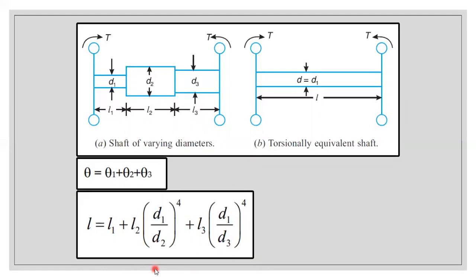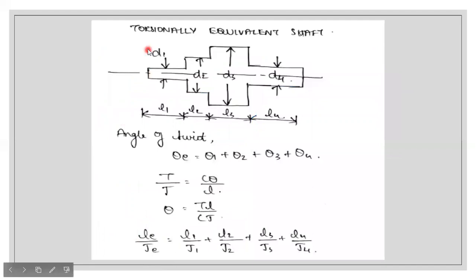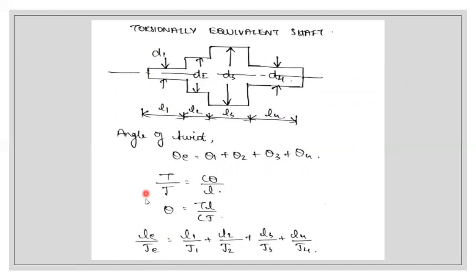Now we will see how we got this formula. We have a varying diameter shaft with four shafts of varying diameter and four different lengths. The angle of twist for the torsionally equivalent shaft should equal the summation of all four individual angles of twist. This formula comes from the torque equation: T/J = Cθ/L = τ/r, where T is the torque transmitted in Newton-meters and J is the polar moment of inertia in meters to the power 4.